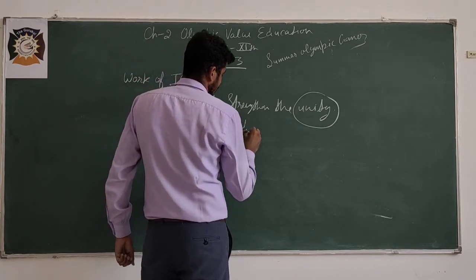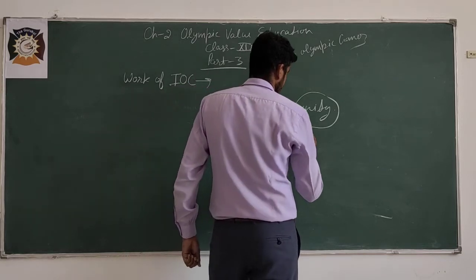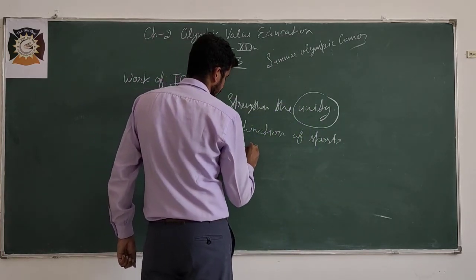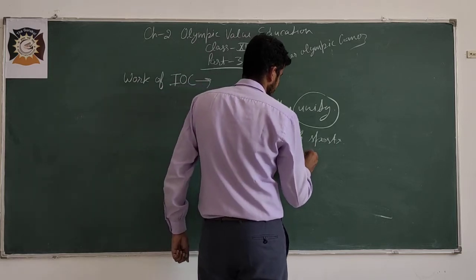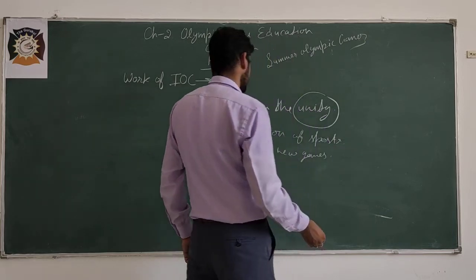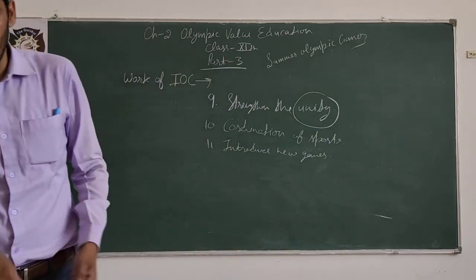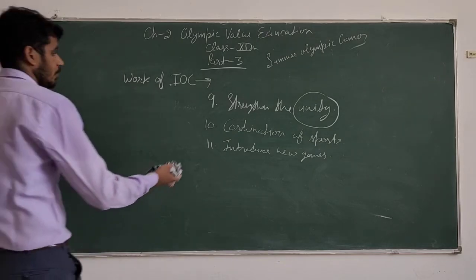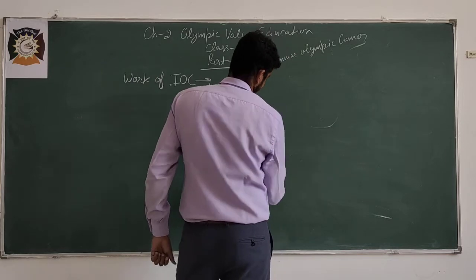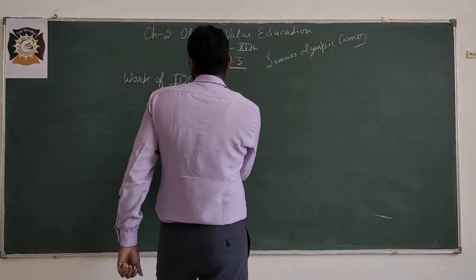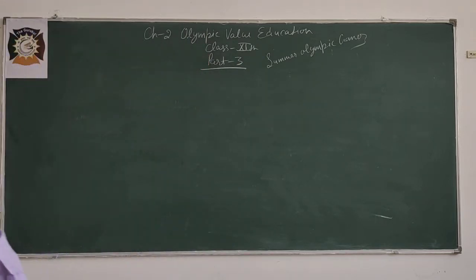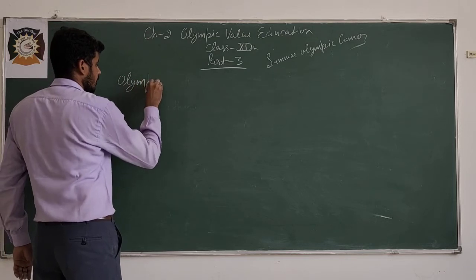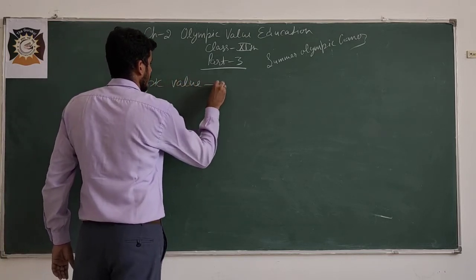Next: coordination of sports. We can say introduce new games. Many more are there if you will check through internet. That main function of IOC. Now we will talk about Olympic values. What is the value or we can say what is the objective? These are the objective also we can say of IOC, International Olympic Committee.